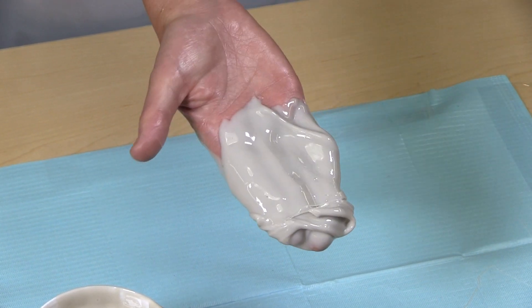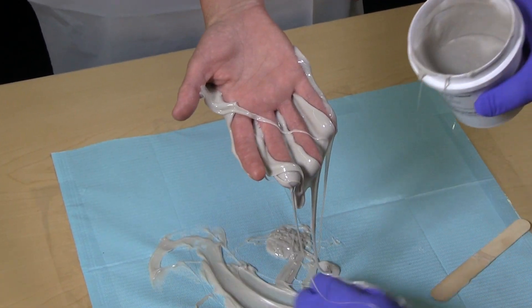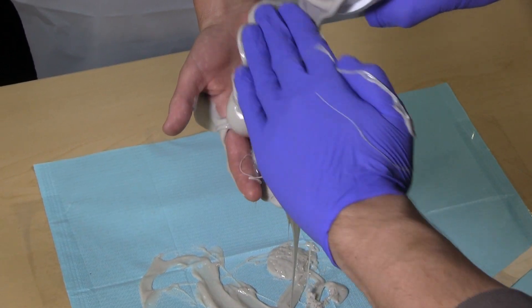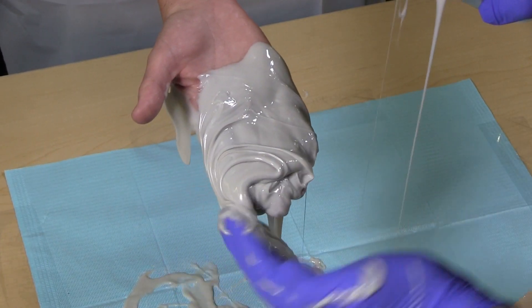A common error is to leave the impression too short. Excess material can be scooped off of the work mat and applied to the hand to fill in any holes or gaps that may appear. Try not to let any holes or thin spots appear.